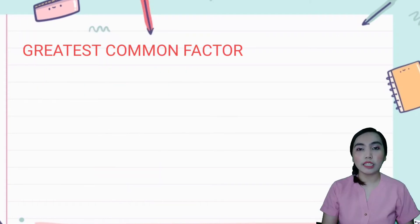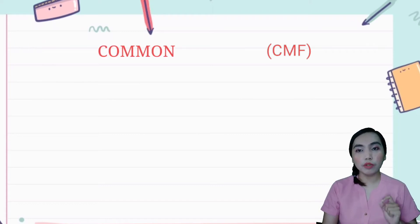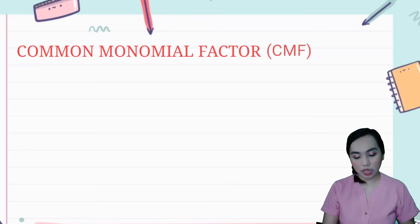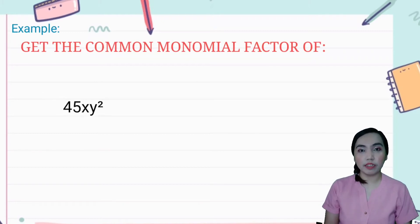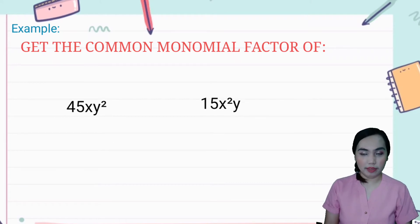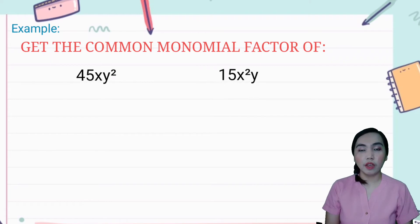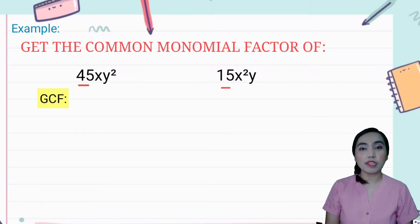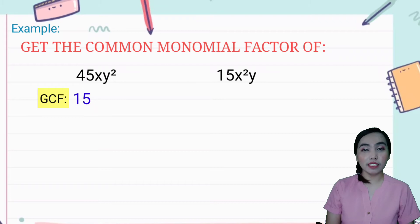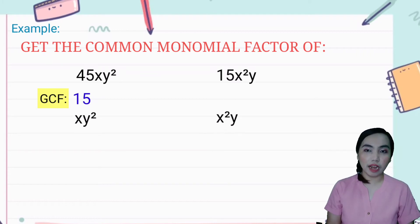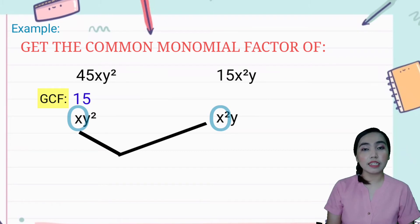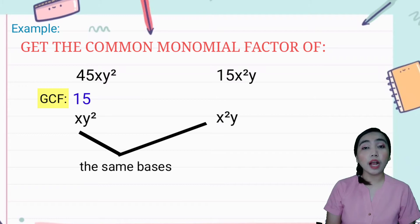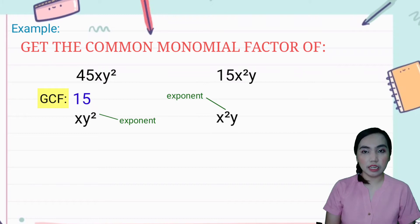Kung ang GCF ay makukuha sa number, ang CMF naman — or the common monomial factor — ay makukuha natin sa algebraic expression. Bigay tayo ng example: 45xy² and 15x²y. Para makuha natin yung CMF ng dalawa, kukunin muna natin yung GCF ng numerical coefficients, which is 15 and 45. Sa 45 and 15, meron silang GCF na 15. Kukunin naman natin yung sa xy² and x²y. So kapag pareho ng variable, ibig sabihin the same bases sila. Kung ano yung pinakamababang exponent on the same basis, yun ang kukunin nating GCF.